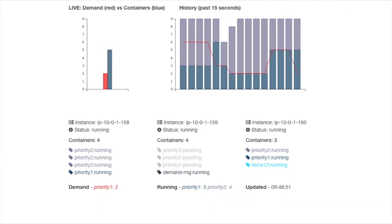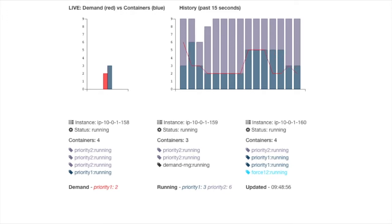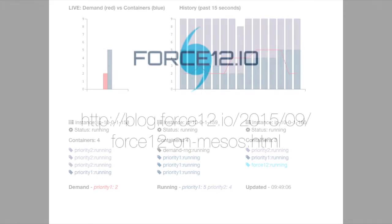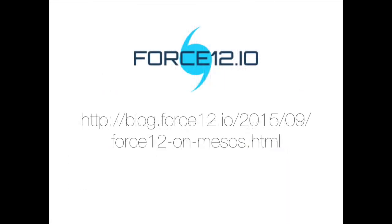To keep things simple, we have a fixed limit of 9 Priority1 and Priority2 containers that can be running at any time. In this way, micro-scaling allows the system to handle high-priority work in real-time, while using spare capacity for lower-priority work in an opportunistic fashion. You'll find much more detail about this demo on the Force12 blog, including links to the code to help you set up your own Marathon Mesos cluster.